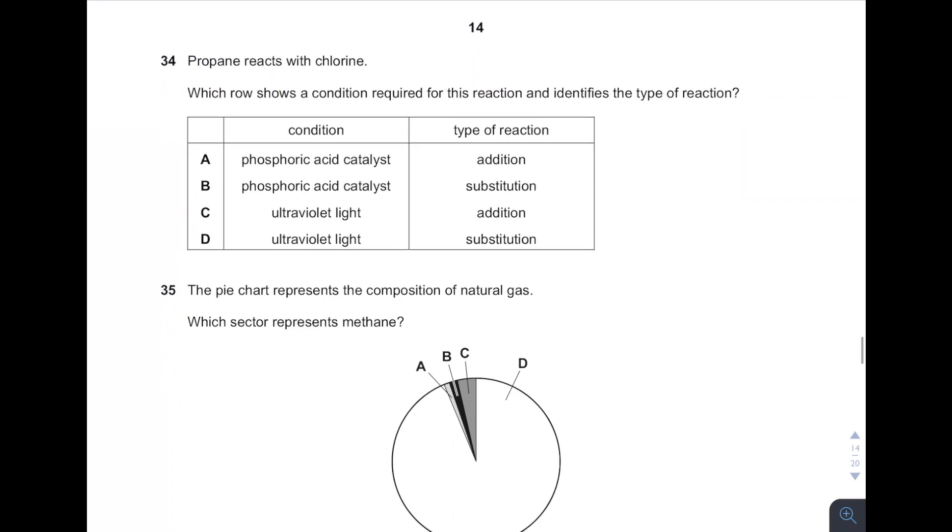Okay, 34. Propane reacts with chlorine. Alkane with halogen. What's the condition needed? Remember, alkane with halogen is what we call substitution reaction. Addition reaction only happens in alkene. This is alkane. What's the condition needed for substitution reaction? It is UV light. D.